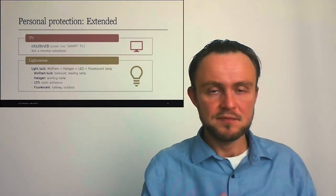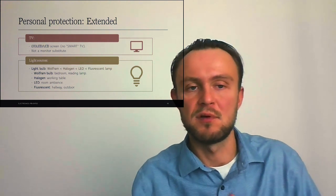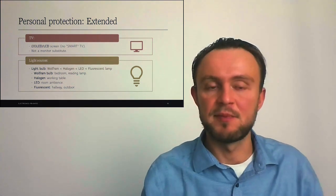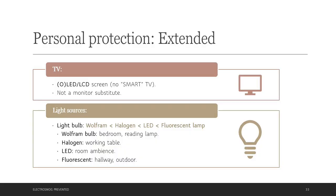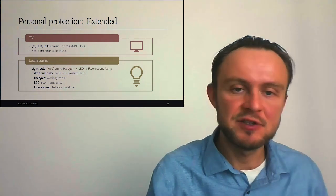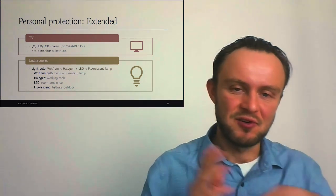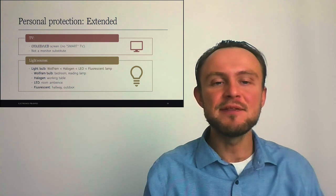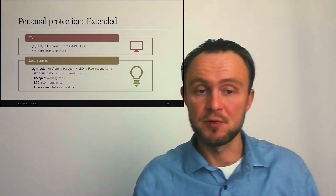If we have television, it's best to have classical flat TV with LED or LCD display. No smart TV. It also shouldn't be used as a monitor substitute for prolonged period of time. If you use it like few hours in a week, it's okay, but it shouldn't be eight hours per day. From the light sources, Wolfram bulb emits less non-ionizing radiation than halogen bulb, which emits less radiation than LED, and this is safer than fluorescent lamp. From this, we can derive which light source use for which situation. So I would use Wolfram bulb by default, mostly in bedroom or for reading lamps.